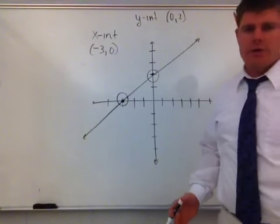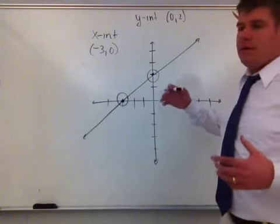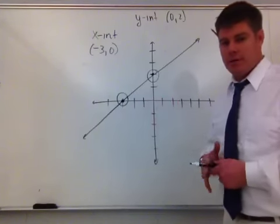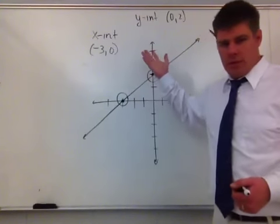That's how you find the x and y intercept from a graph. You literally just go to the coordinate of where it crosses and list it. So let's talk about those horizontal and vertical lines.